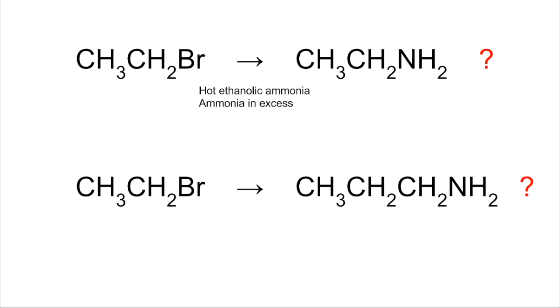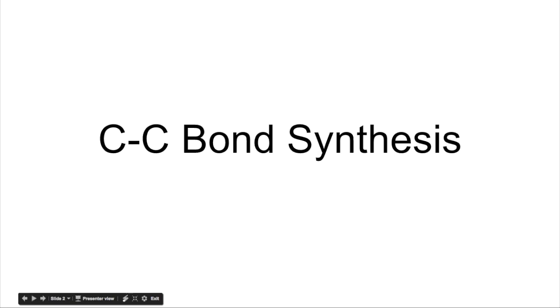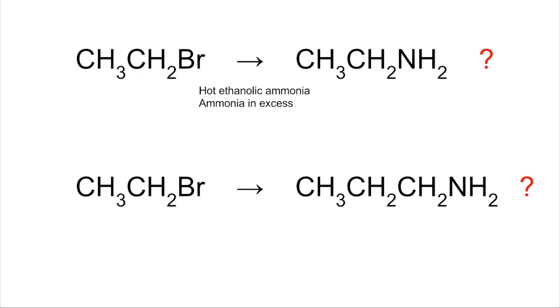Now imagine you wanted to carry out this conversion: bromoethane to propylamine. How would you do that? Well, it's very different because we are increasing the carbon chain length from two carbons up to three. So in this video we're going to look at carbon-carbon bond synthesis, how you can extend the carbon chain, what you can do with the product, and then we'll come back to this problem and hopefully get to an answer.